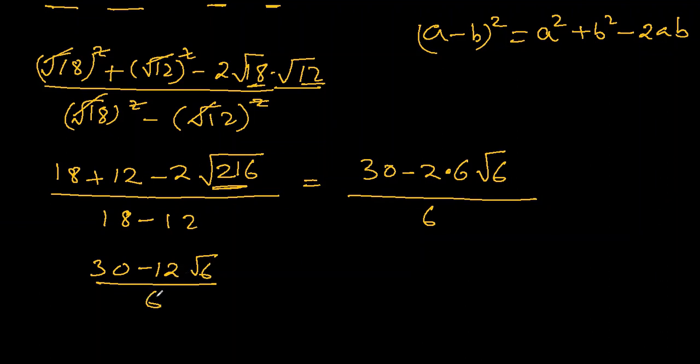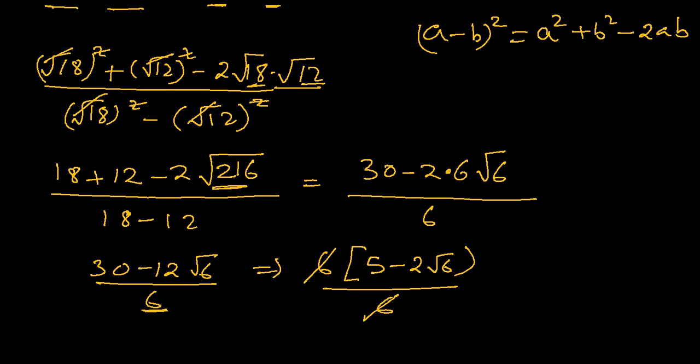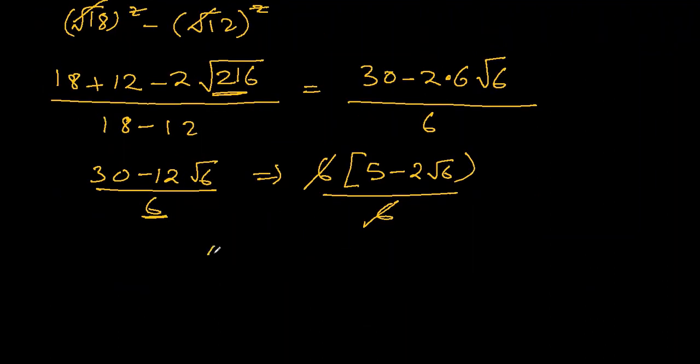And now, 6 can be taken common out of this so that the denominator gets cancelled out. So 6 taken common, we'll be left with 5 minus 2 square root 6 over 6. And that was the purpose. 6 and 6 get cancelled out and we are left with 5 minus 2 square root 6. That's the final answer.